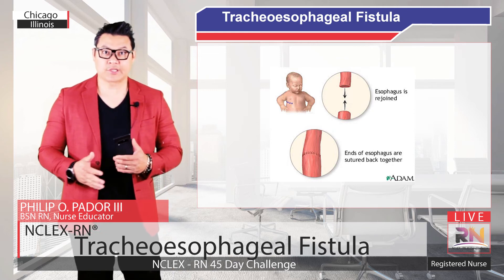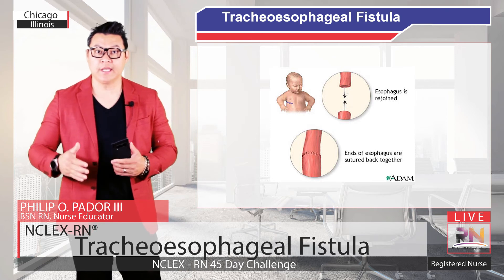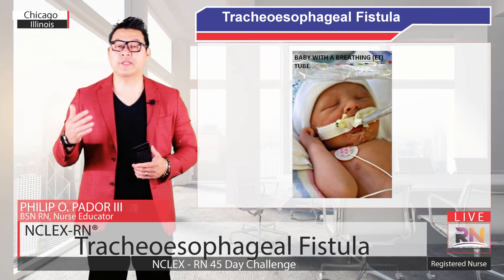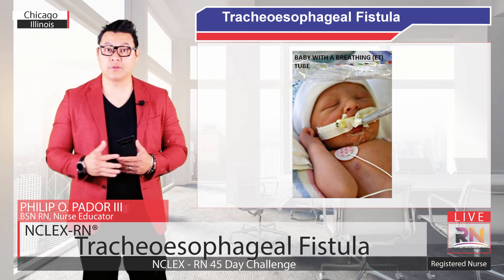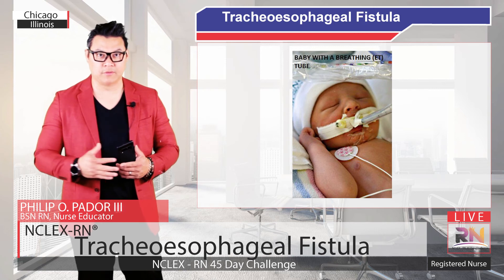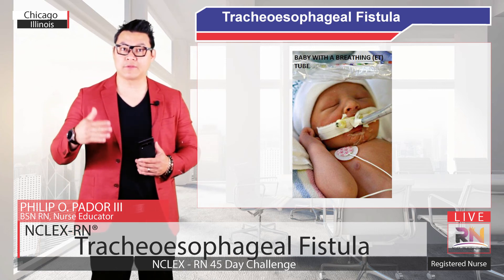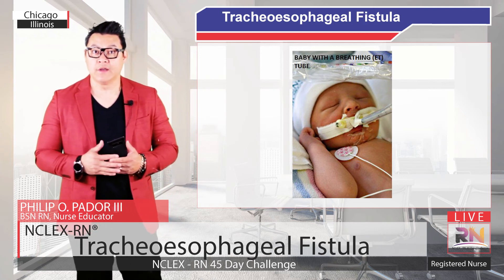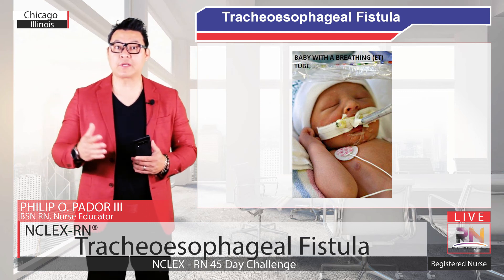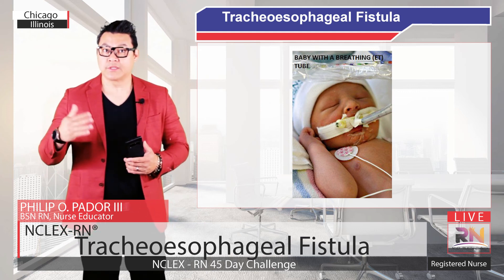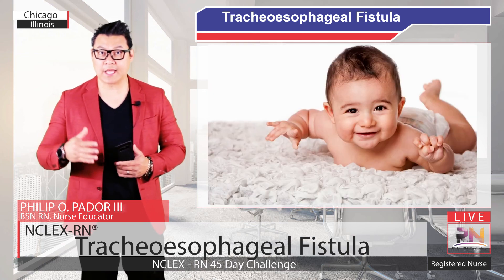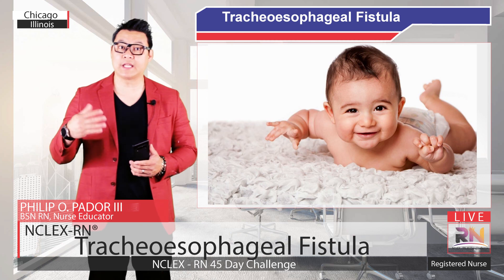Finally, the surgeon will insert a surgical drain into the chest and close the incision with sutures. After the procedure, the baby will continue to use the breathing tube until they've healed enough to breathe on their own. The baby will be taken to the neonatal intensive care unit for monitoring. Pain medication will be given, and the baby may continue to receive antibiotics through the IV. Babies are released from the hospital when they are able to eat enough to maintain their weight, which may be after two weeks or longer.